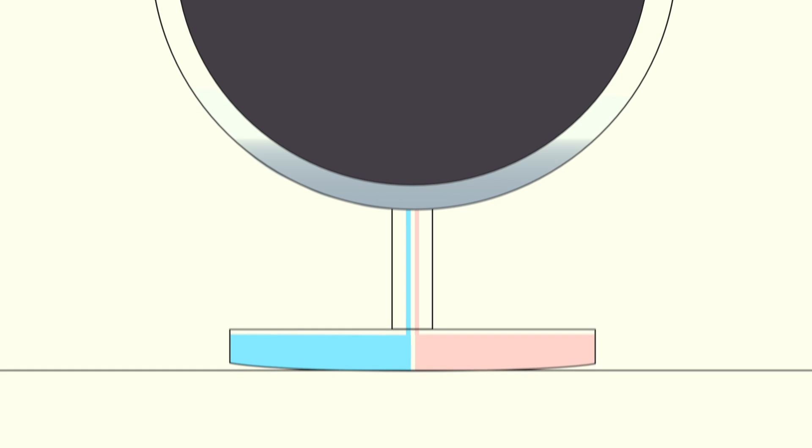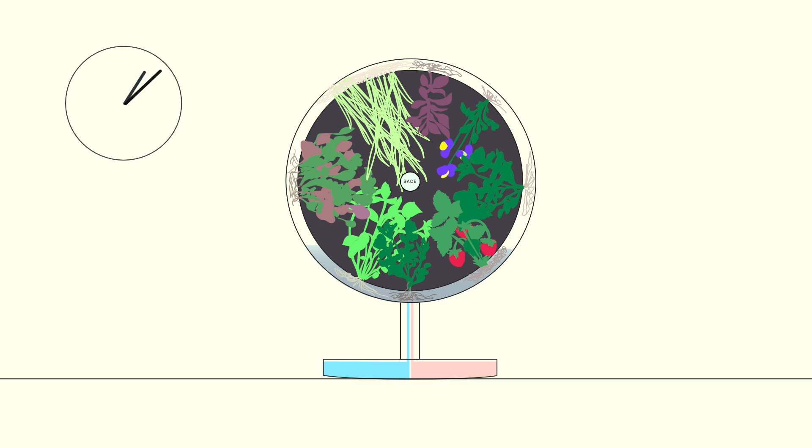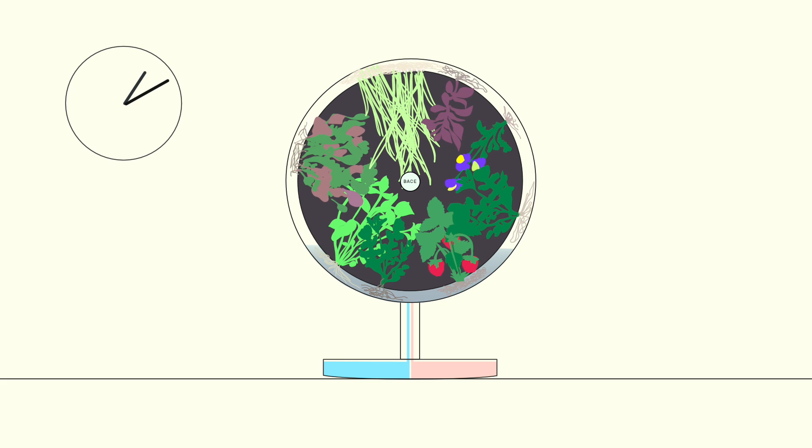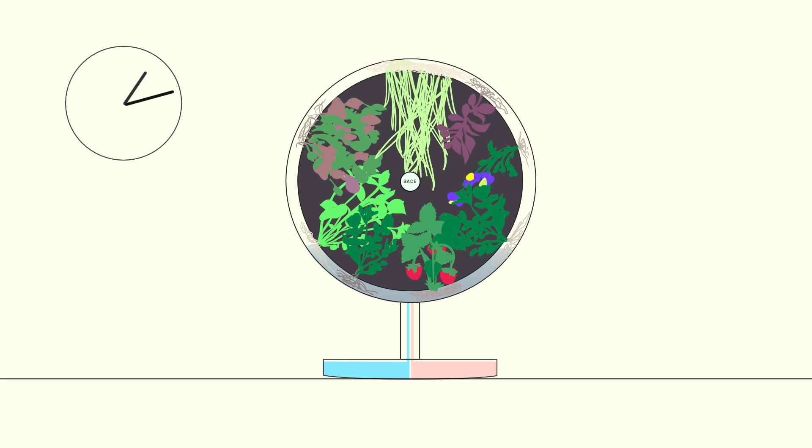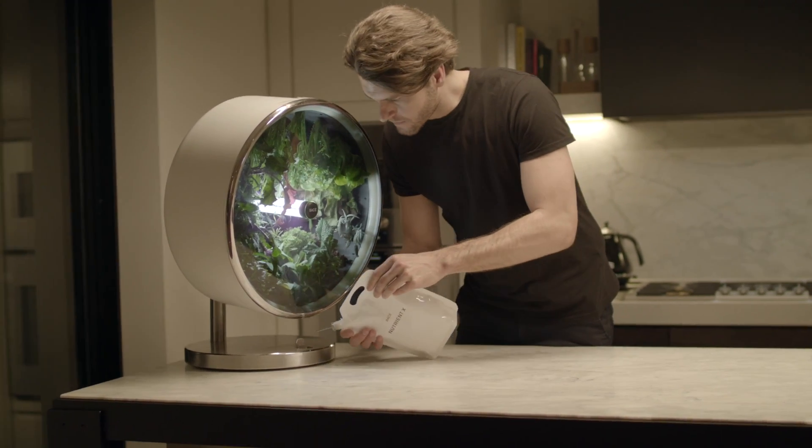Plants inside Rotofarm are automatically fed from the nutrient and water reservoirs in the stand. This means they're provided just the right amounts of organic nutrients, water, and beneficial bacteria for optimal growth and taste. No water is wasted in soil or evaporation.